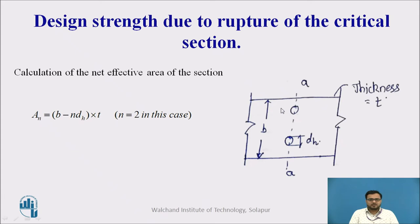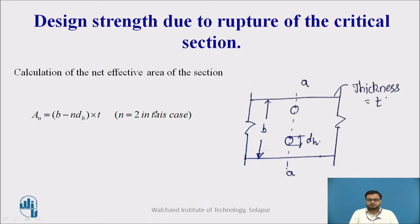For the plate, as seen in the figure, two holes are present. The net area for the plate section is given by AN = (B − N · DH) × T. Here N = 2 because there are two holes, DH is the diameter of the bolt hole, and B is the width of the section. This gives the net effective area of the section for the plate.